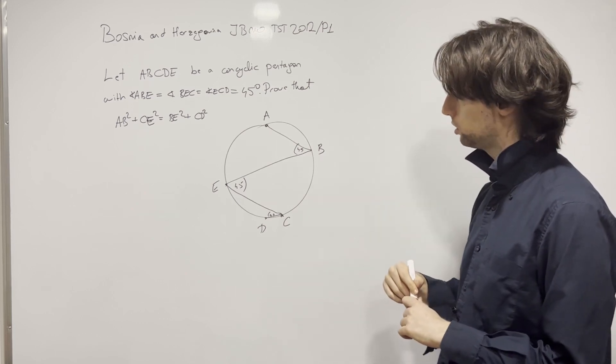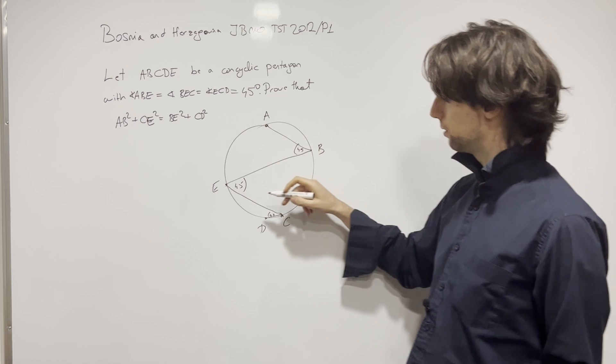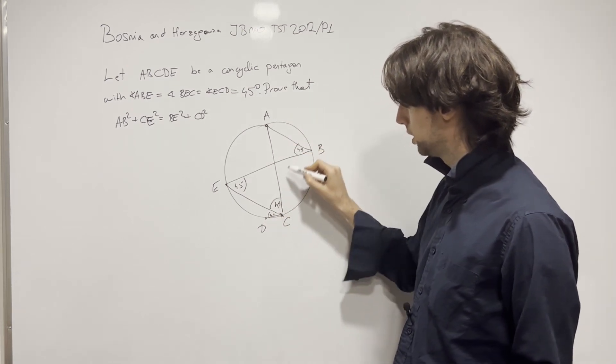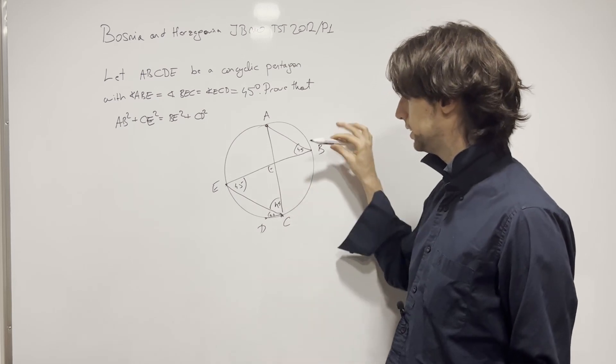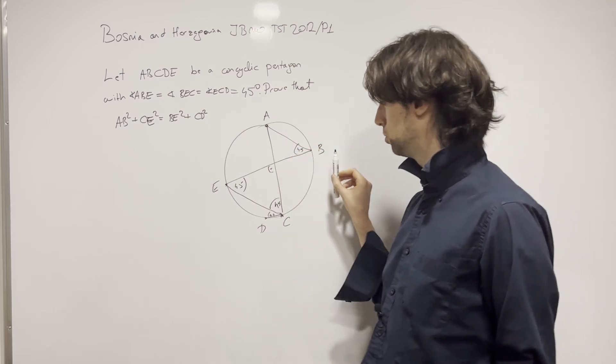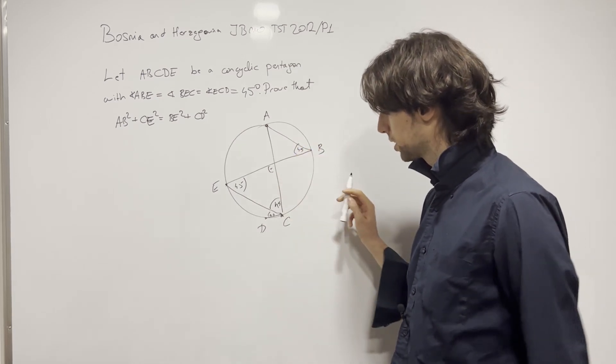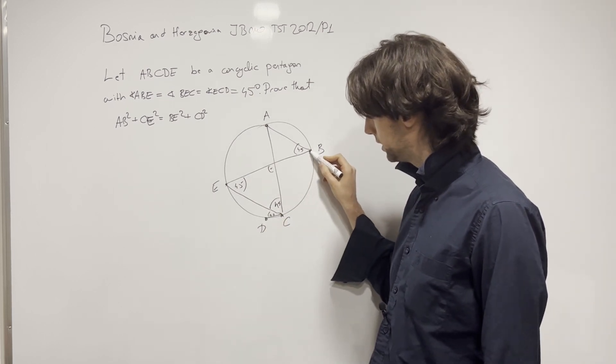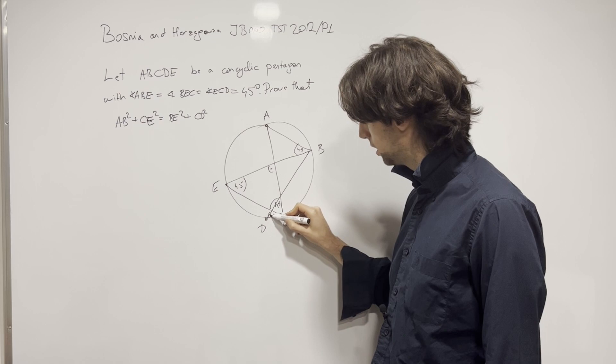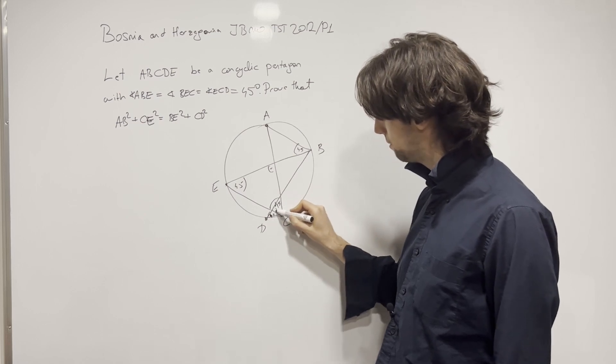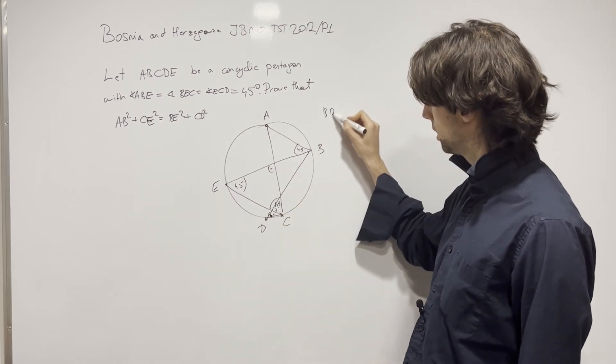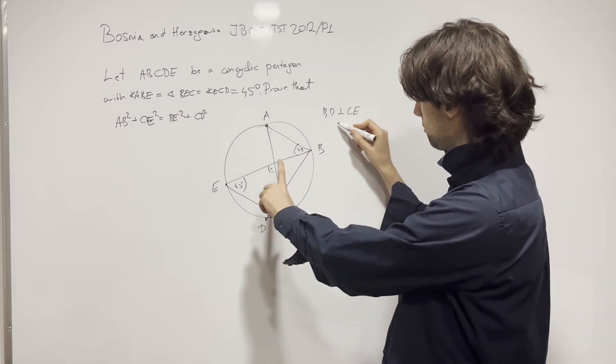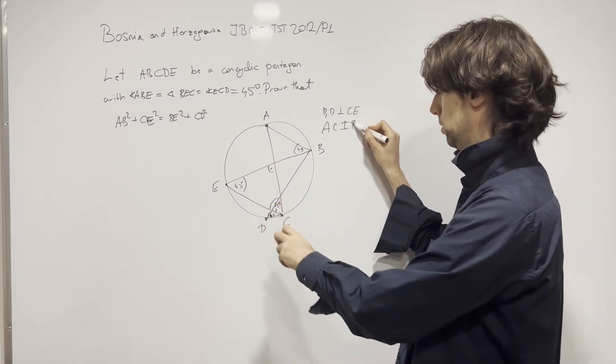What do we have from the angles? So ABE is 45. This angle is 45 as well. So we have that AC is perpendicular to BE. And then let's also see what we have from this one being 45. So 45, 45, we have BD is perpendicular to CE. And AC is perpendicular to BE.